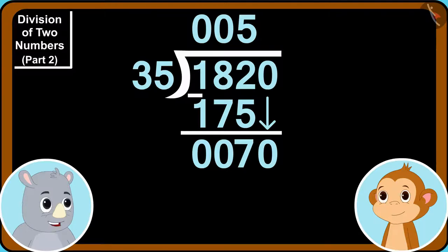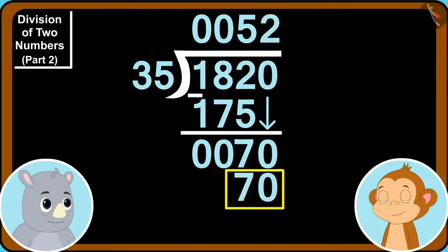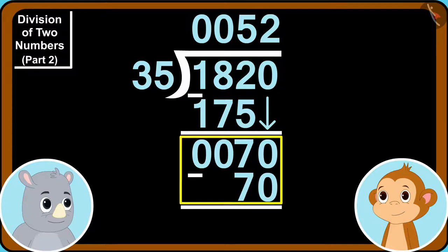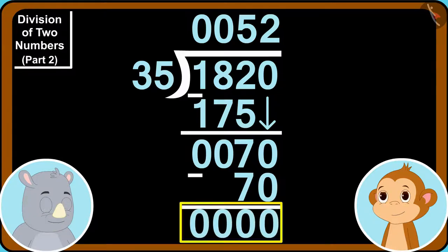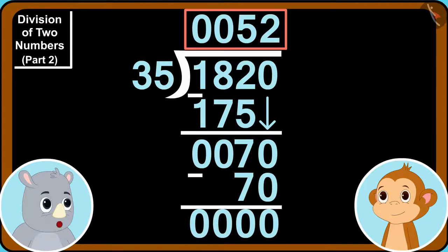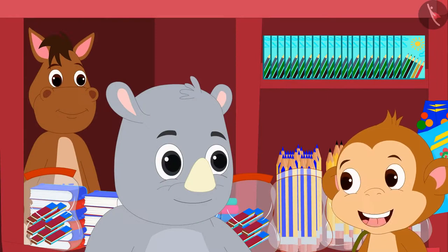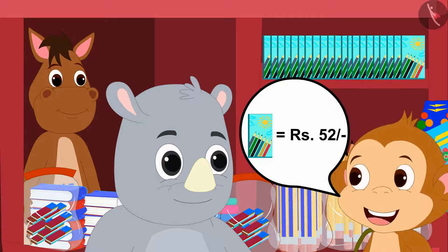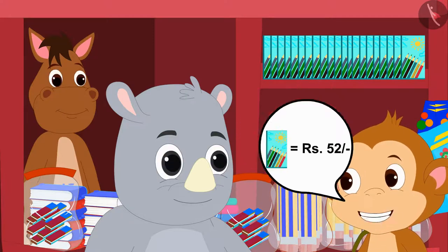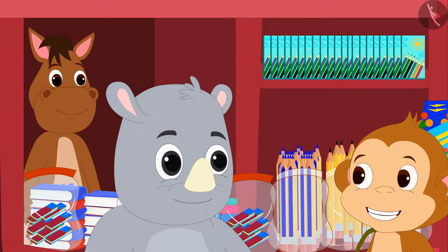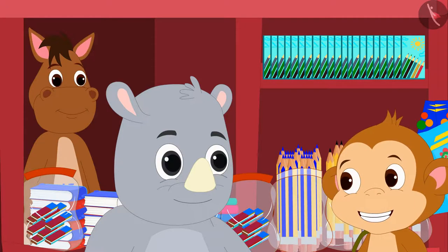Well done, Babban. So, we will now write 2 here and write 70 at the bottom. 70 minus 70 is 0. We got our answer, Babban. Gaggoo told Babban. Oh, Gaggoo. The cost of one color pencil box is 52 rupees. Babban told Gaggoo excitedly.